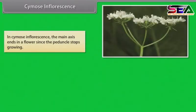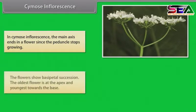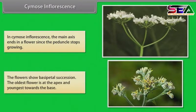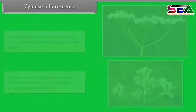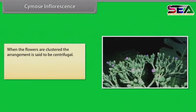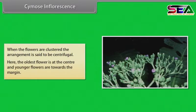In cymose inflorescence, the main axis ends in a flower, since the peduncle stops growing. The flowers show basipetal succession — the oldest flower is at the apex and the youngest towards the base. When the flowers are clustered, the arrangement is said to be centrifugal, where the oldest flower is at the center and younger flowers are towards the margin.